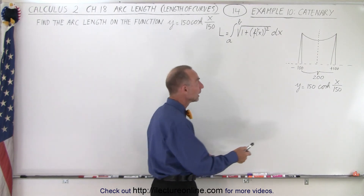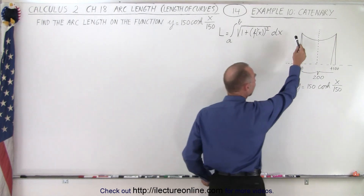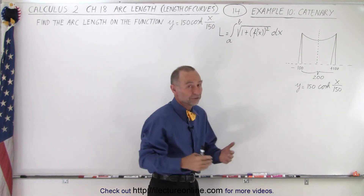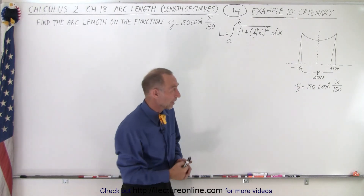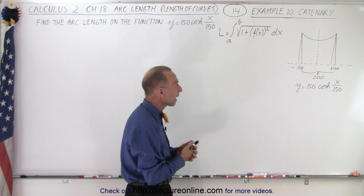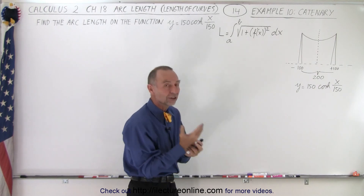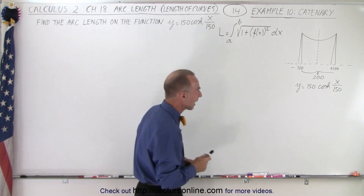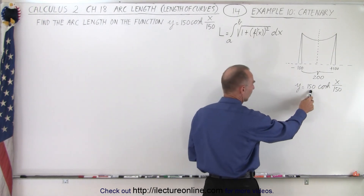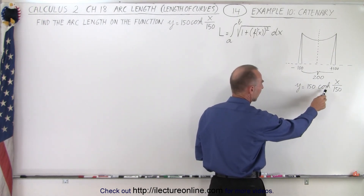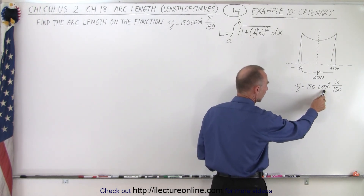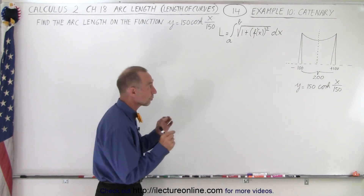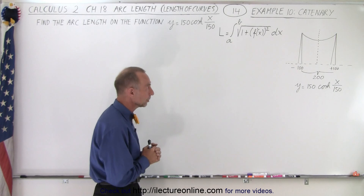Here we have what we call a hanging cable between two towers. The two towers are 200 feet or 200 meters apart. We have an equation that describes the actual curve of that cable: y equals 150 times the hyperbolic cosine of x over 150. What we're trying to do is find the length of that cable.